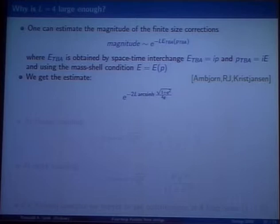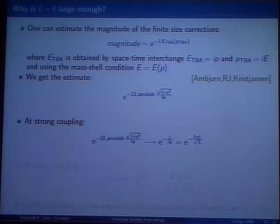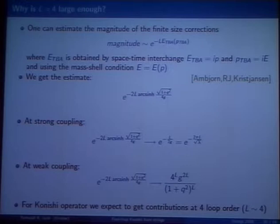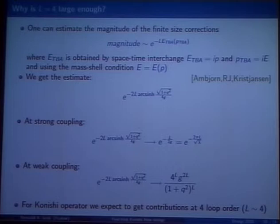For relativistic theories the interchange gives relativistic formulas, but in our case since the dispersion relation is not relativistic, performing this interchange leads to the estimate that the single correction is like e^(−2L · arcsinh(√(1 + p²/4))). At strong coupling when g is large, one gets e^(−2πL/√λ), the typical string theory correction. Most interestingly, at weak coupling when g is small, the arcsinh becomes a logarithm and we get corrections like g^(2L). For the Konishi operator this means the leading contribution is at four-loop order, and the next virtual-particle contribution is suppressed by an additional factor — so we can get exact results at four-loop order.